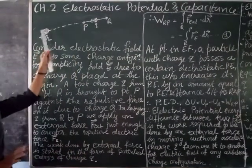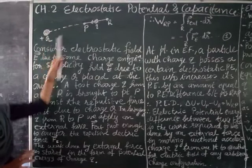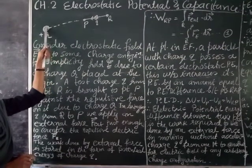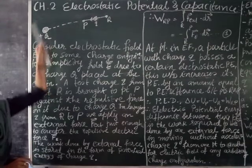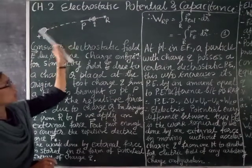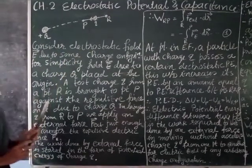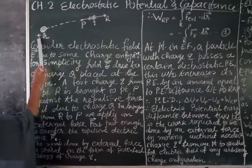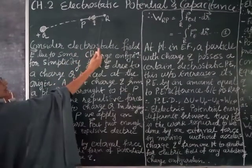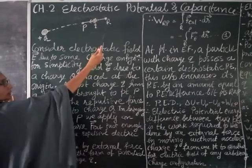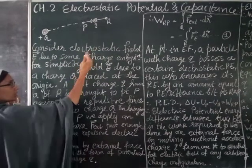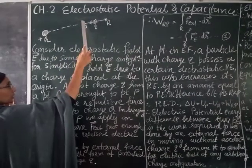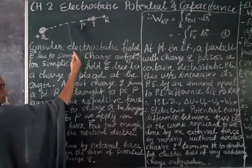We have learnt that when there is any charge, it will create an electric field around it. So if this is a positive charge, it will create the field around it, towards the outside — it will be outward. When we bring this charge Q from R to P, the electric field because of this charge Q is outward.